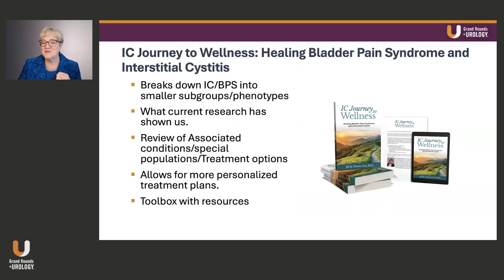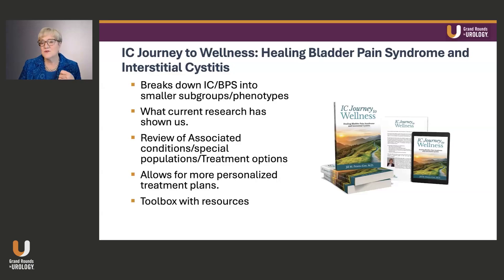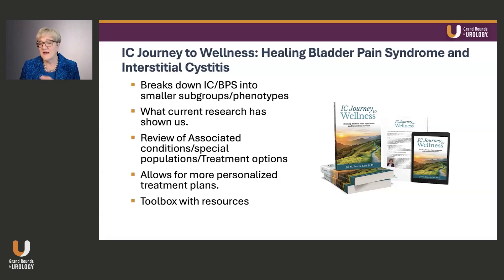In 2024, I published IC Journey to Wellness, written both for patients and health care providers alike. The book provides a framework — a roadmap for helping to identify phenotypes. Patients can hear what the clues are and then identify with a phenotype that fits their history and symptoms. It brings readers up-to-date on current research, especially regarding phenotypes, with references for all important studies. It also highlights associated conditions that can mimic IC symptoms and outlines special populations like men and children that have unique challenges.